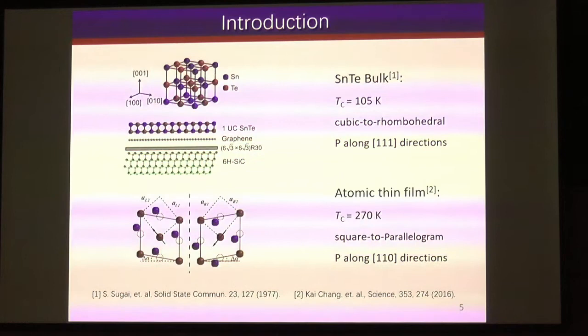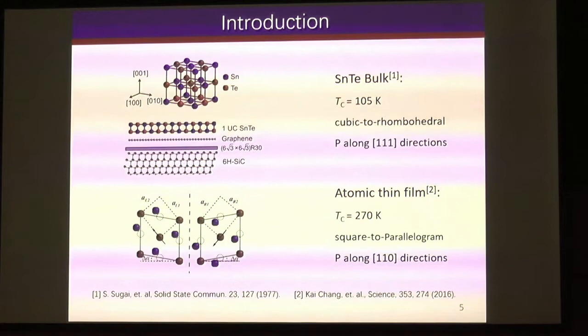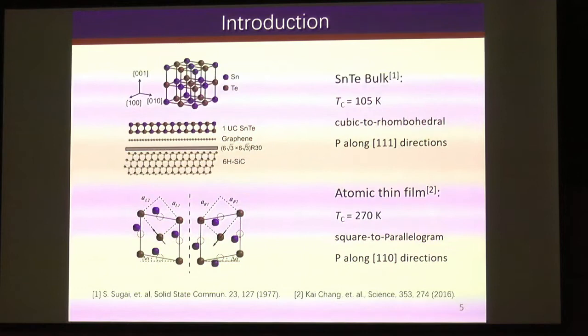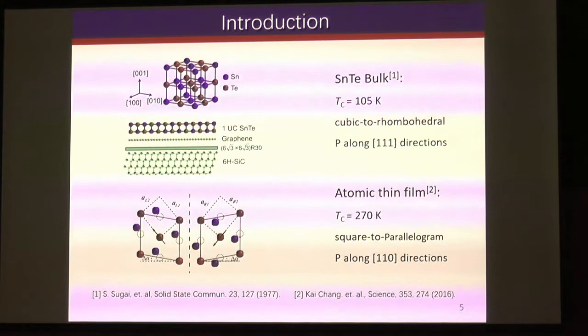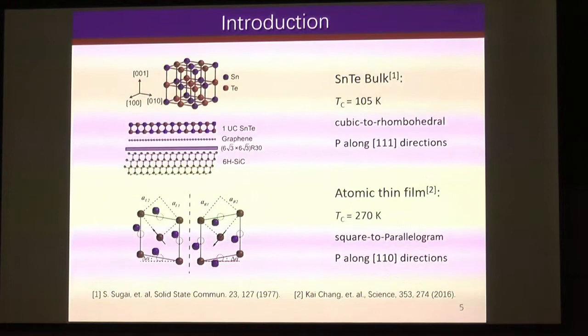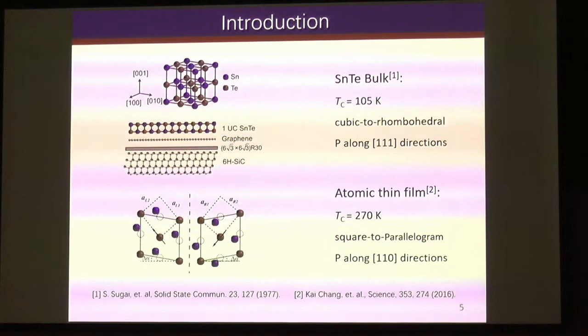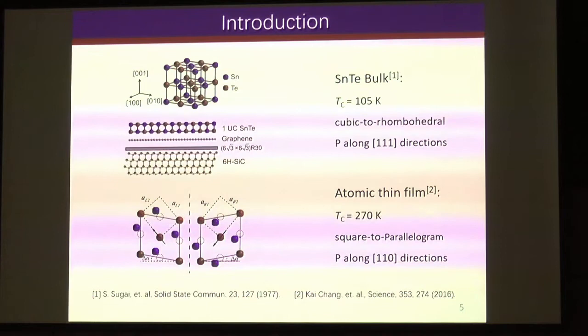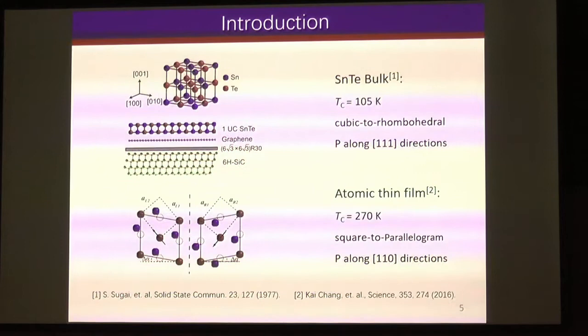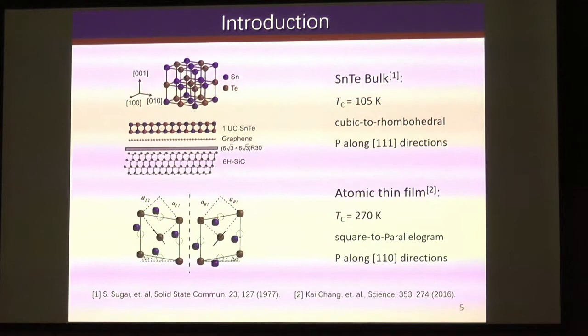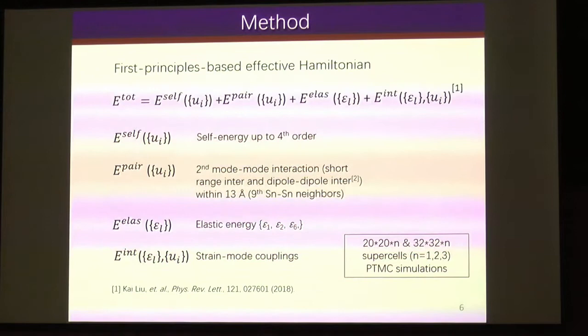That real 2D material is tin telluride. The previous speaker, Dr. Ji, just introduced the structure. The bulk tin telluride is a rock salt structure with a ferroelectric Curie temperature around 100 Kelvin. At the ferroelectric phase, it's rhombohedral with polarization along the [111] direction. When it is set as a one-unit-cell atomic-thin case, the rhombohedral becomes planar, and surprisingly the transition temperature increases to around room temperature. This is the system we are going to investigate for the existence of the BKT phase.